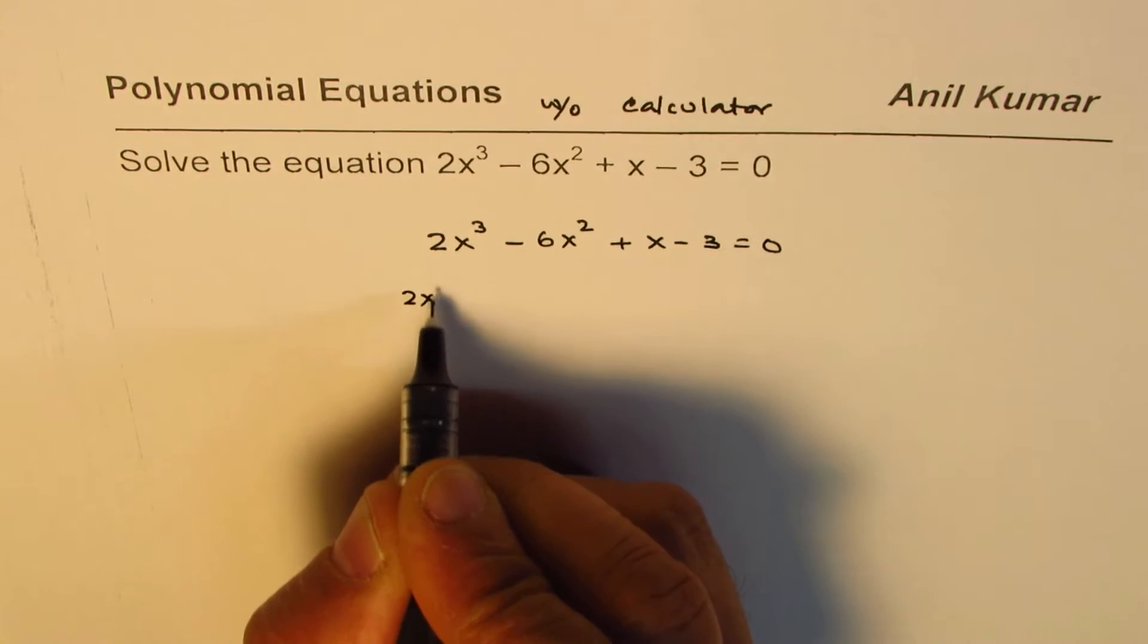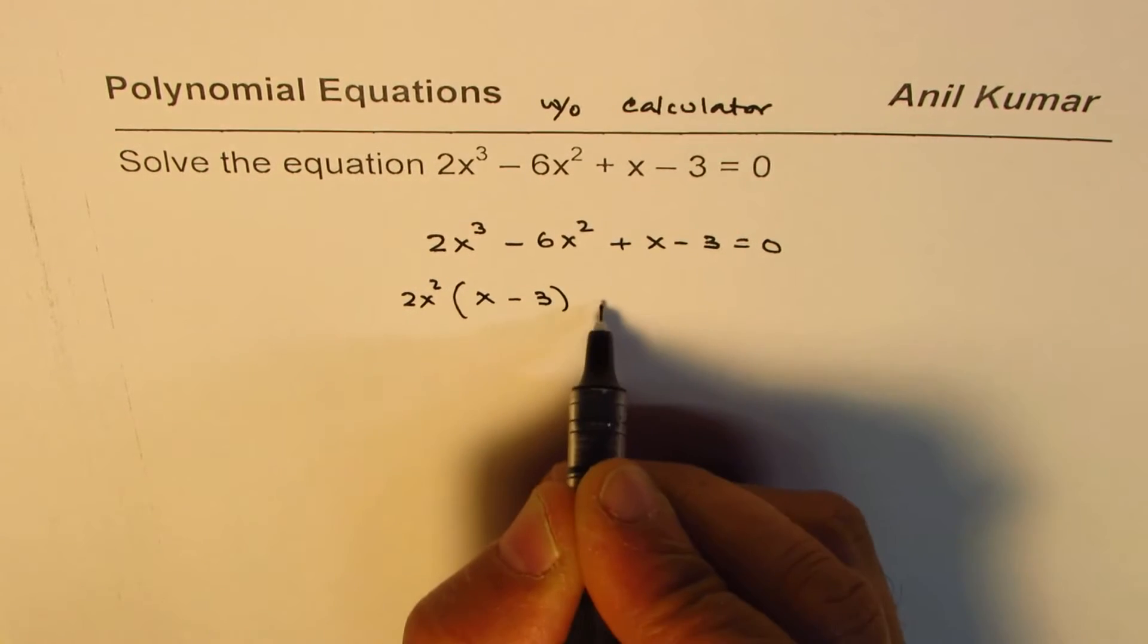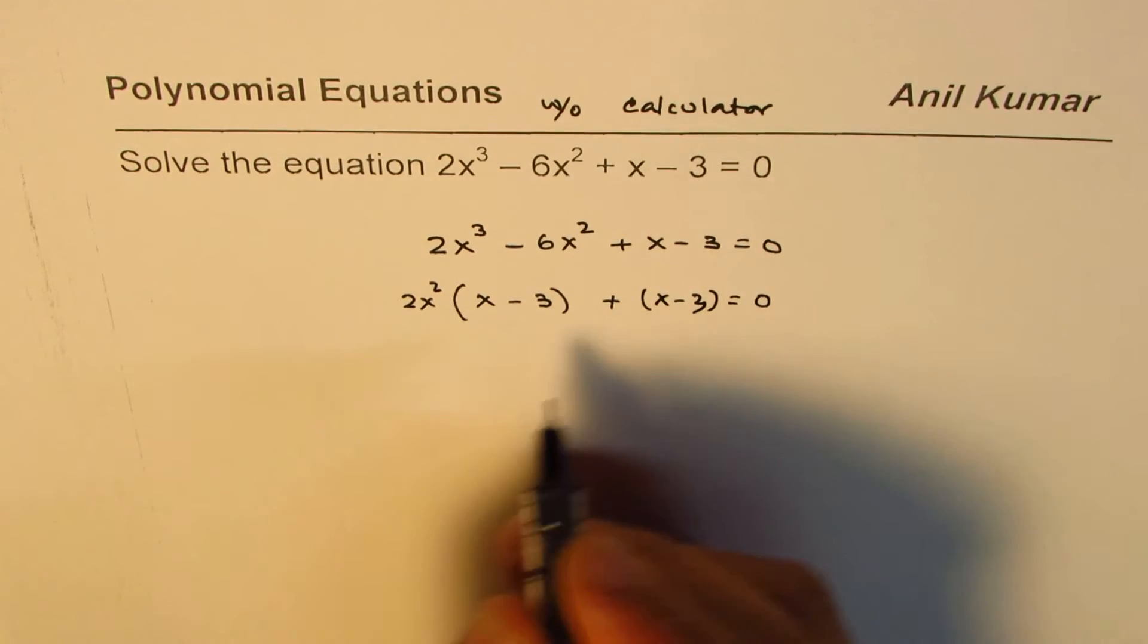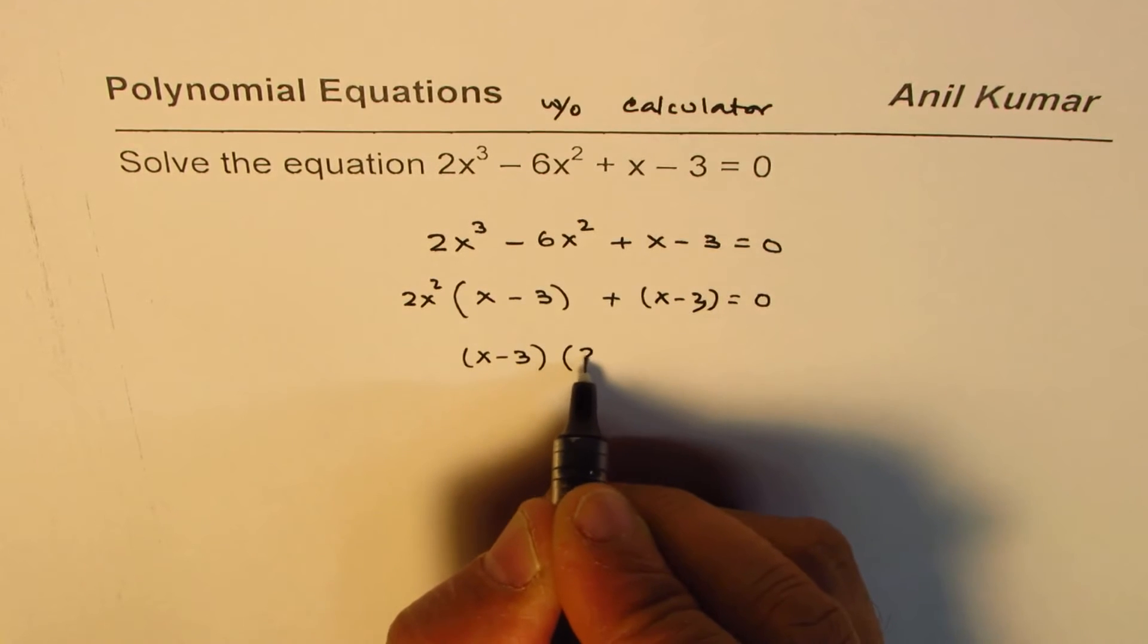If you take 2x² common from the first two terms you get x - 3, and you have x - 3 as the last two terms. Now you can take x - 3 common and you get 2x² + 1.